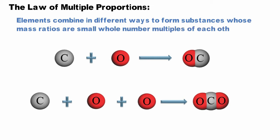For example, the mass of carbon that combines with the mass of oxygen to form carbon monoxide will always have the mass ratio of one carbon to one oxygen.